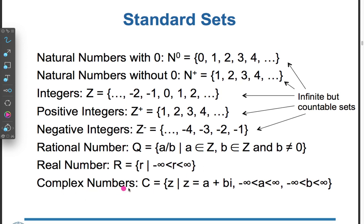Complex numbers: C = {z such that z = a + bi, where a is between negative infinity and positive infinity, and b is also between negative infinity and positive infinity}. In this way, all these standard sets are infinite sets, but countable sets.